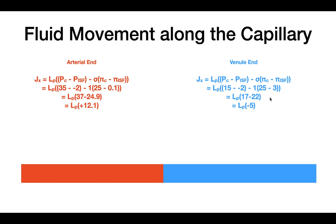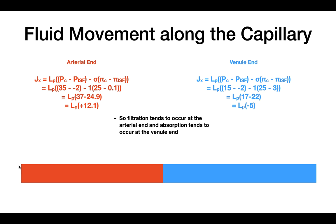If you do the same at the venule end and plug in all the values, what you get is a negative flux. At the arterial end, since the flux is positive, this causes filtration. At the venule end, since the flux is negative, this causes absorption. So we absorb fluid at the venule end and filter fluid at the arterial end.